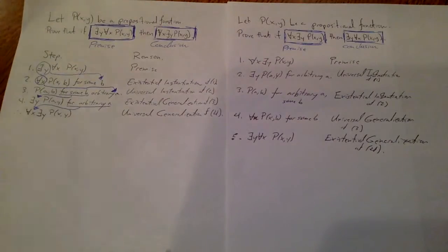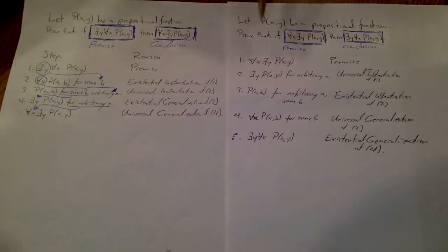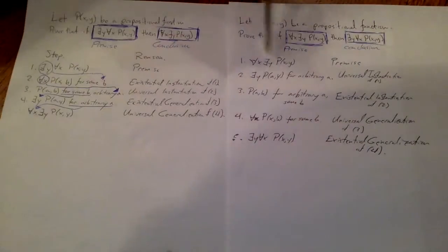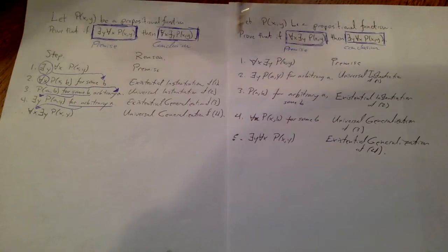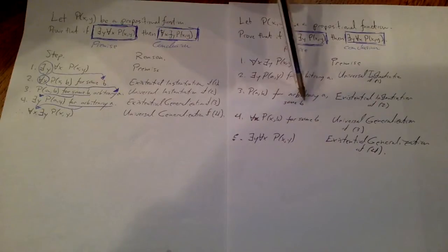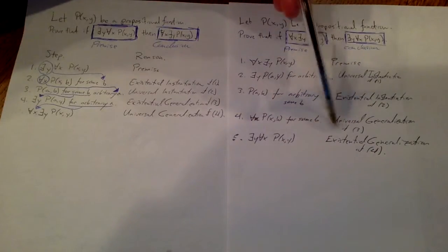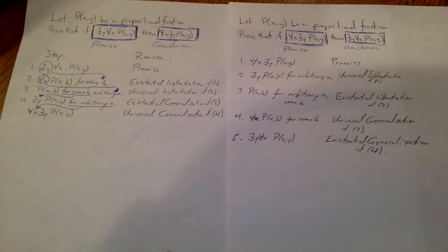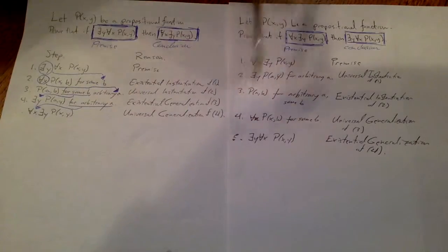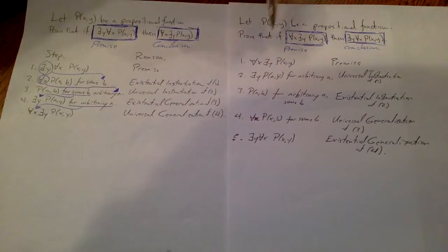Let's step through this proof — it's very similar. I follow essentially the same steps. I start with my premise: for all x there exists a y P(x,y). Then I use universal instantiation to drop my first quantifier and say 'there exists a y P(a,y)' for arbitrary a. Then existential instantiation to get rid of this existential, giving p(a,b) for arbitrary a and some b. But then I use universal generalization to add in 'for all x P(x,b)' for some b. And then existential generalization to put 'there exists y' in front. This is very similar to what I just did — but there's a problem because this theorem is false.